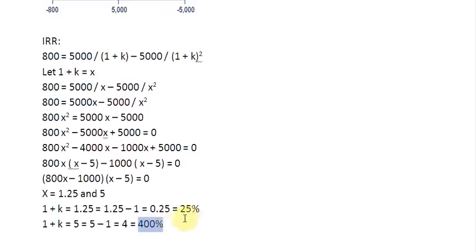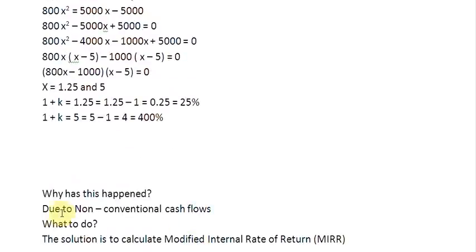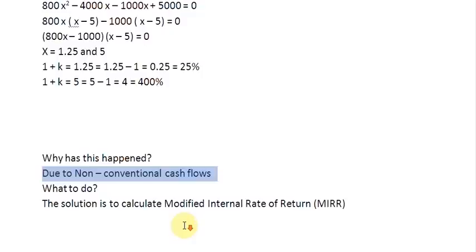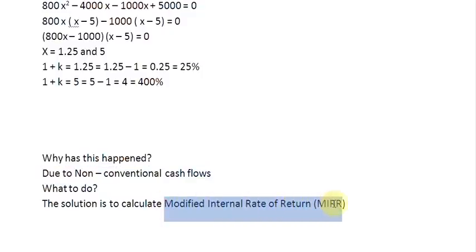The NPV becomes 0 at a 25% discount rate and also becomes 0 again at a 400% discount rate. This result is pretty misleading, and it happened because we are dealing with non-conventional cash flows. The solution to this problem is to find what is known as the modified internal rate of return, or MIRR, which we will cover in another screencast. For now, bye-bye.